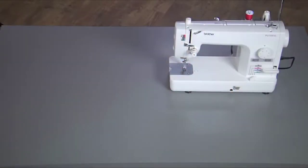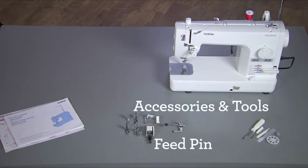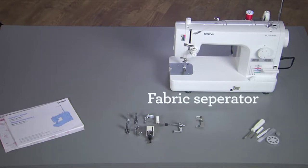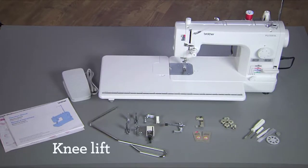What comes in the box? You'll find seven different presser feet, plus all these accessories and tools: feed pin, fabric separator, needles, bobbins, a foot controller, knee lift, and cover.